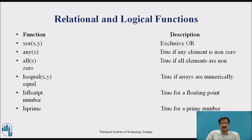So any(x) will equal 1 if any element is non-zero. all(x) will give result equals 1 — that is true — if all elements are non-zero. isequal(x, y) is true if arrays are numerically equal. isfloat is true for a float point number. isprime is true for a prime number.